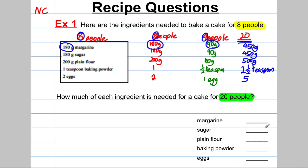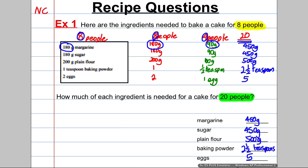Write your answers in the space provided and always write your units: 450 grams of margarine, 450 grams of sugar, 500 grams of flour, two and a half teaspoons, and five eggs. And we're done with the first style of question.